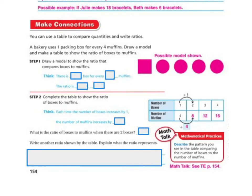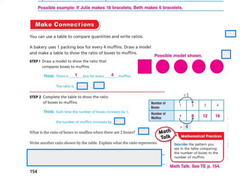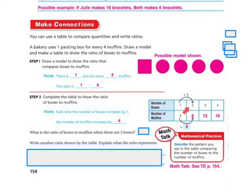You can use a table to compare quantities and write ratios. A bakery uses 1 packing box for every 4 muffins. Draw a model and make a table to show the ratio of boxes to muffins. The ratio is 1 to 4. Complete the table: each time the number of boxes increases by 1, the number of muffins increases by 4. So: 1 box — 4 muffins, 2 boxes — 8 muffins, 3 boxes — 12 muffins, 4 boxes — 16 muffins. Each time we're increasing by 4.